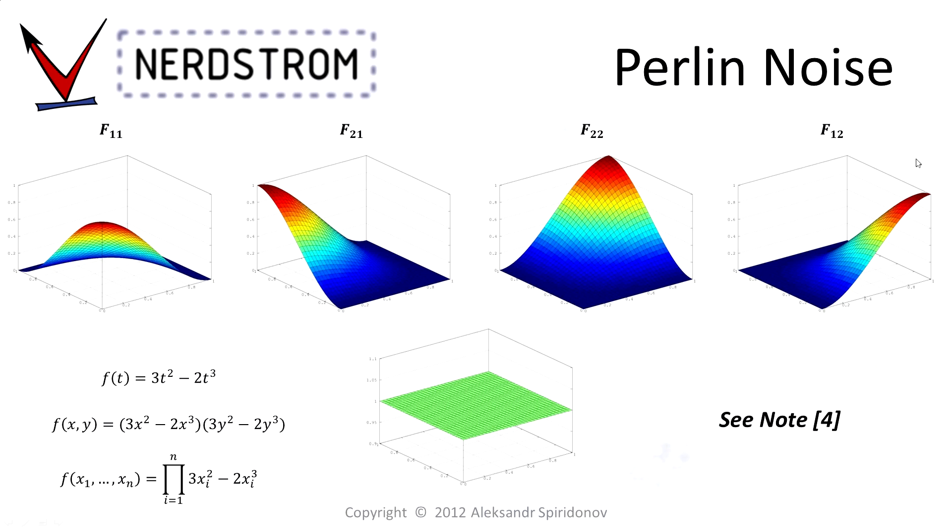Perlin often used the s-curve, defined in one dimension as 3t squared minus 2t cubed. The curve, or surface, works in higher dimensions through repetitive products of the formula across all the dimensions, as shown in the lower equation. The equation for two dimensions, which we will be using, is given in the middle.